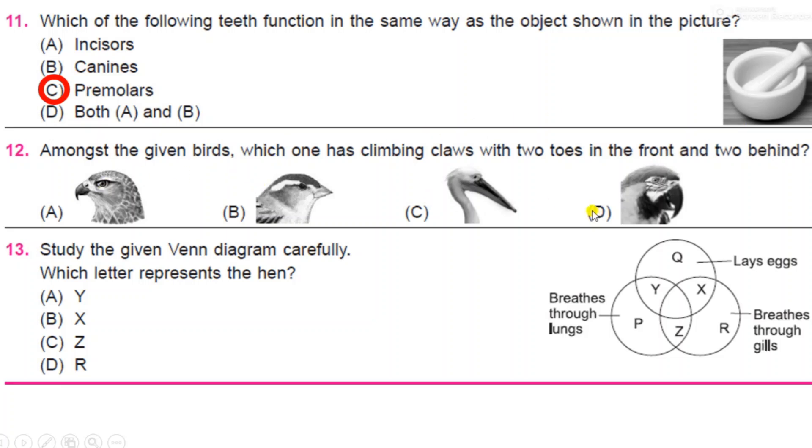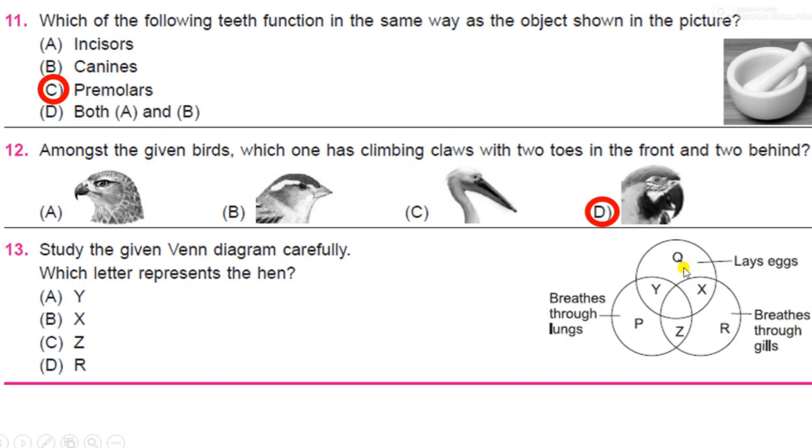Study the given Venn diagram carefully. Which letter represents the hen? So this is a Venn diagram: breathes through lungs here, breathes through gills, and lays eggs. Now which letter represents the hen? Y, X, Z, or R? It is Y, because it lays eggs and hen also breathes through lungs. So the answer is Y.